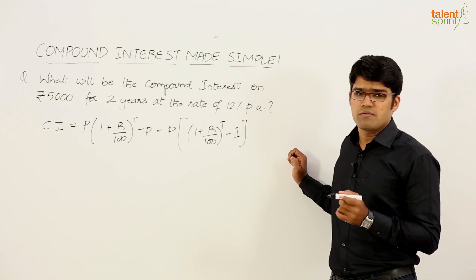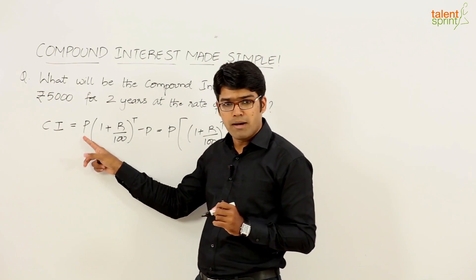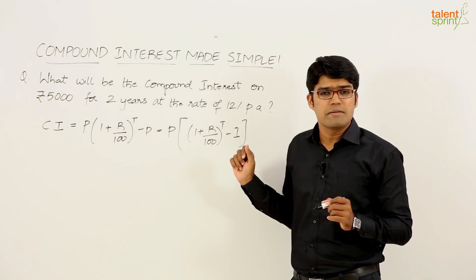This is the formula that we use for the calculation of compound interest where P is the principal amount, R is the rate of interest and T is the time period.